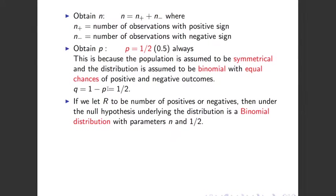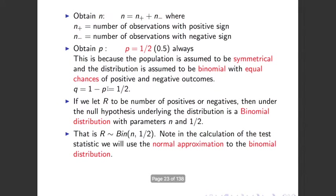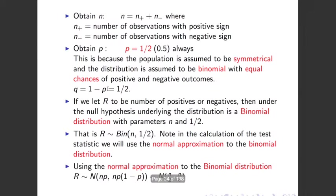We then calculate r. If we let r be the number of positives or the number of negatives, then under the null hypothesis the underlying distribution is the binomial distribution with parameters n and one half. So r is binomially distributed with parameters n and p equals one half. In the calculation of the test statistic, we use the normal approximation to the binomial distribution. So r is normally distributed with mean np and variance np(1-p). Since p equals one half, the mean is n over 2 and the variance is n over 4.